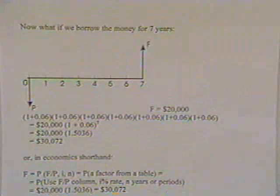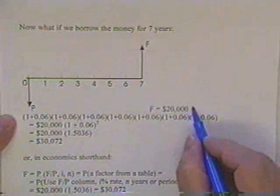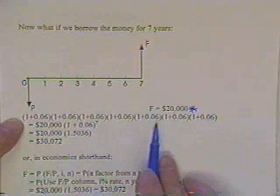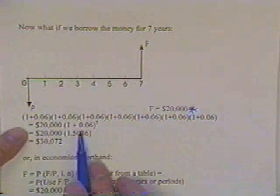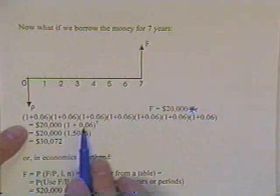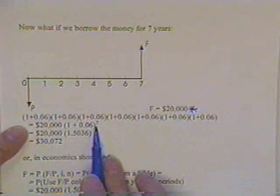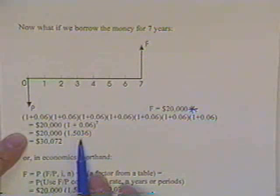Now then, going back to our previous discussion of borrowing money from the bank—twenty thousand dollars—what if you borrowed it for seven years? You have two choices: you can multiply twenty thousand times a series of 1.06 numbers, which is what we're doing every time we borrow the money for another year, or you can just use the equation given to you: twenty thousand times one plus the interest rate raised to seven years.